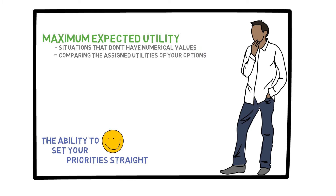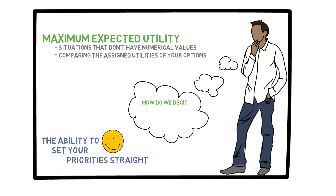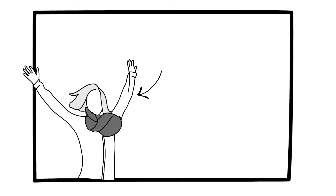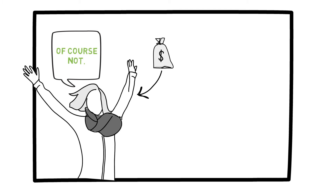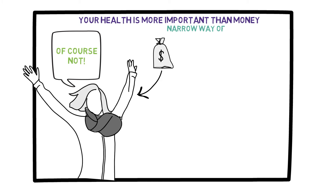Unfortunately, many of us have a narrow way of thinking about such things. In this video, I would like to make the concept of assigning utilities clearer. How do we decide which things in life are important and which aren't? Would you trade one of your arms for $1 billion? You would probably say, of course not — that's a silly question. The point here is that your health is more important than any sum of money. You can't put a price on it. In other words, if I sacrifice my health in order to achieve a goal, I have my priorities backward, and I am suffering from a narrow way of thinking.